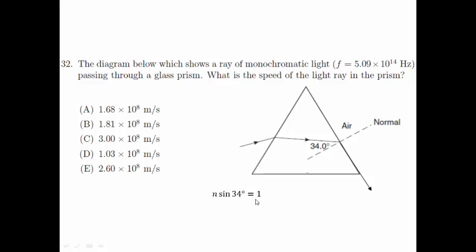n sin 34° = 1. And we know that the speed of light in the medium is equal to c/n. So by substituting this equation, we get the value of v_light equals 1.68 x 10^8 m/s.